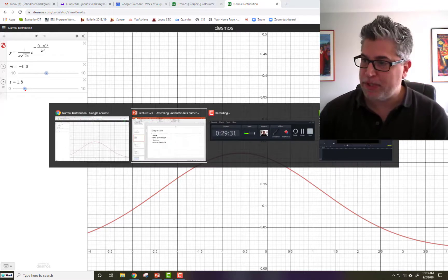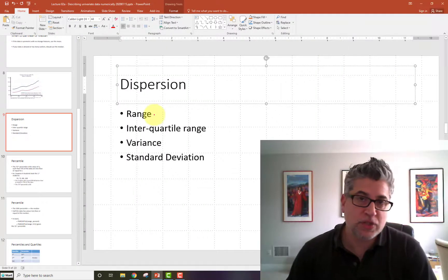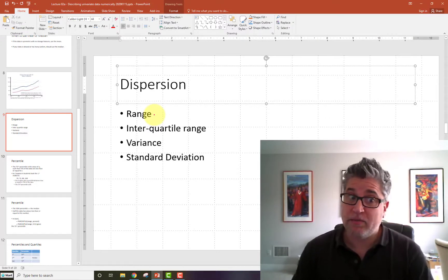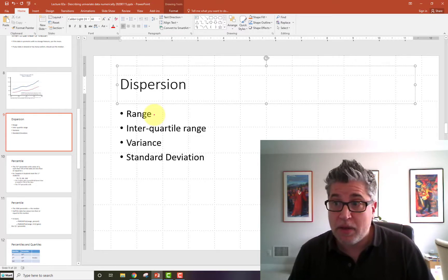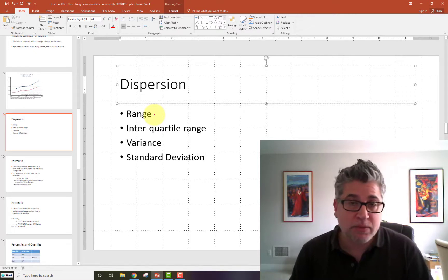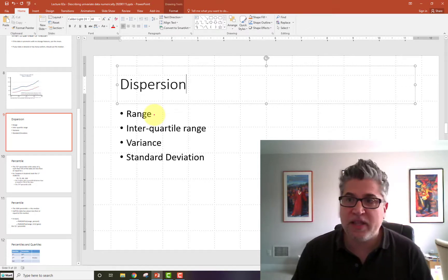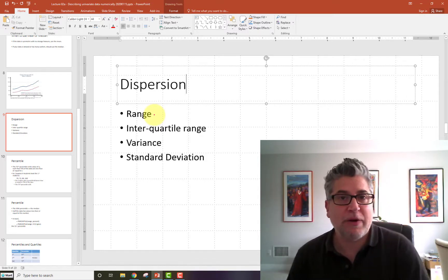Probably the simplest measure of dispersion is the range. That's just what the word means. What's the range of values that our data set takes on? If we're talking about an exam, chances are the high grade is 100, and hopefully the low grade is bigger than 0, but it'll be some number between 0 and 100. More than likely, it's probably something like between 50 and 100, but that would be the range.